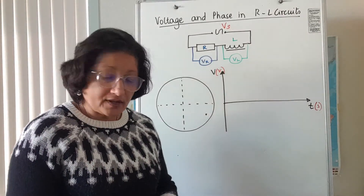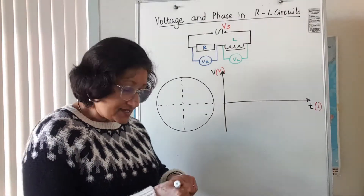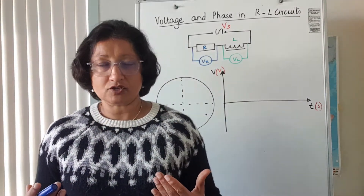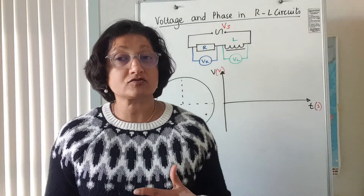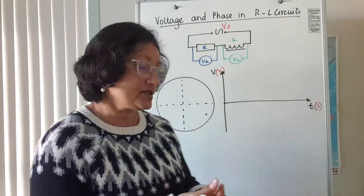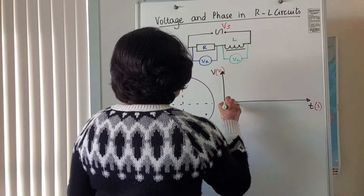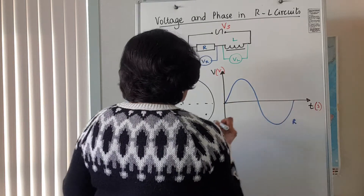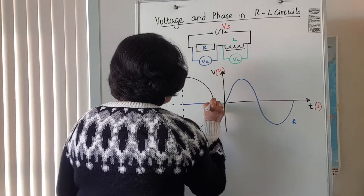If you look at the trace of this on an oscilloscope, this is what we get. We find that the voltage across the resistor and the voltage across the inductor are 90 degrees out of phase, or out of phase by a quarter of a cycle, because a whole cycle is a whole up-and-down movement. Number one represents the voltage across the resistor, depicted by the blue arrow.